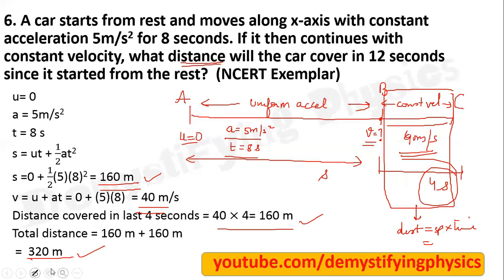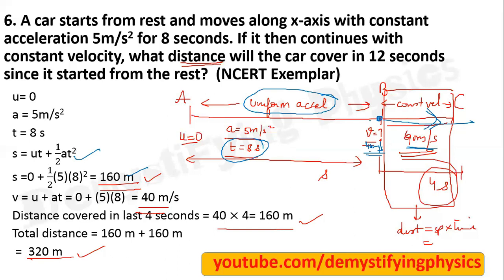Hope you have understood. For the first 8 seconds the body traveled with uniform acceleration, so we used uniformly accelerated motion equations and found distance for first 8 seconds as 160 meter. We also found velocity after 8 seconds, which is 40 meter per second. After that the car moves with uniform velocity of 40 meter per second. We need total 12 seconds, so 4 seconds remain. Distance in 4 seconds is 40 times 4 equals 160 meter. Total distance is 160 plus 160 equals 320 meter in 12 seconds.